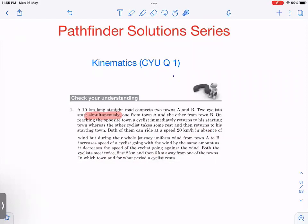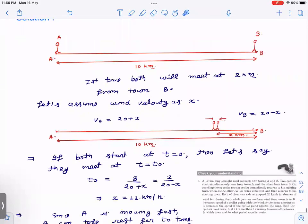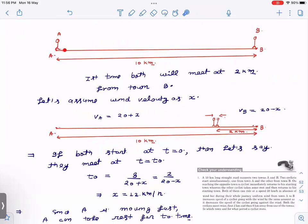You can pause the video and try this question. This is average difficulty question. If you try it properly, you'll get it. So let us straight away go to the analysis of this. So this is the straight road. This is town A and this is B. This is person A and person B.